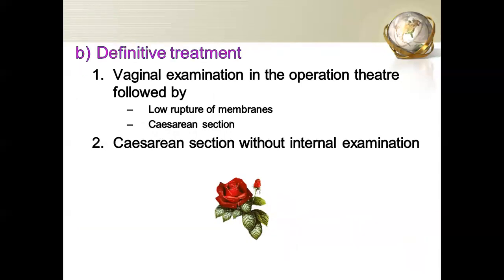For definitive treatment, vaginal examination in the operation theatre can be done for low-lying or marginal placenta cases, but the main treatment is caesarean section. Without internal examination, once the fetus has attained maturity, the mother can be taken for caesarean section. This concludes the discussion on placenta previa. Thank you.